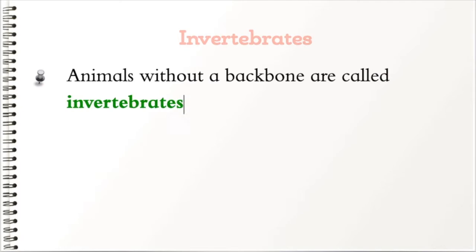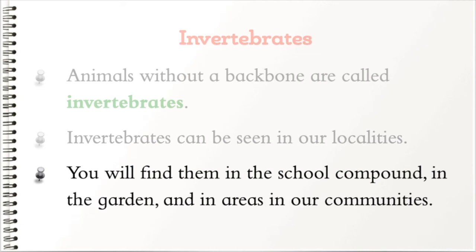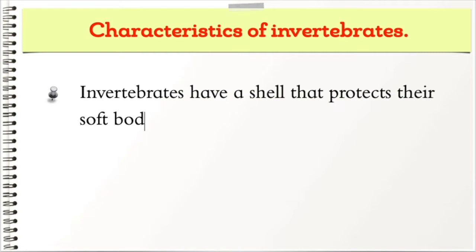Animals without a backbone are called invertebrates. Invertebrates can be seen in our localities — you will find them in the school compound, in the garden, and in areas in our communities. Invertebrates have a shell that protects their soft bodies, and some have a hard outside covering called an exoskeleton.